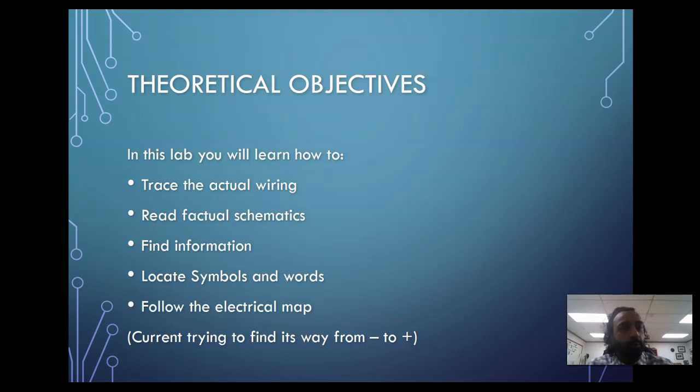In the field, you'll run into situations where you have to follow installation diagrams or schematics to install equipment. You'll learn how to locate symbols and words—what they mean and what that symbol pertains to. There's always something called a legend that gives you a map of what's being drawn. Follow the current electrical map—it shows direction of what's happening inside that circuit. Current is always trying to find its way from the source to the sink, from minus to positive in DC, or from hot to neutral in AC.